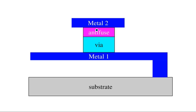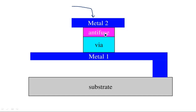The anti-fuse is established between two metals: Metal 1 and Metal 2. From the figure, when a high current passes through Metal 1 or Metal 2, the anti-fuse establishes a connection between them. Initially there is no connection, but when current passes through, Metal 1 and Metal 2 become connected. The most important thing is that once the anti-fuse establishes a connection, it is permanent — you cannot disconnect them.